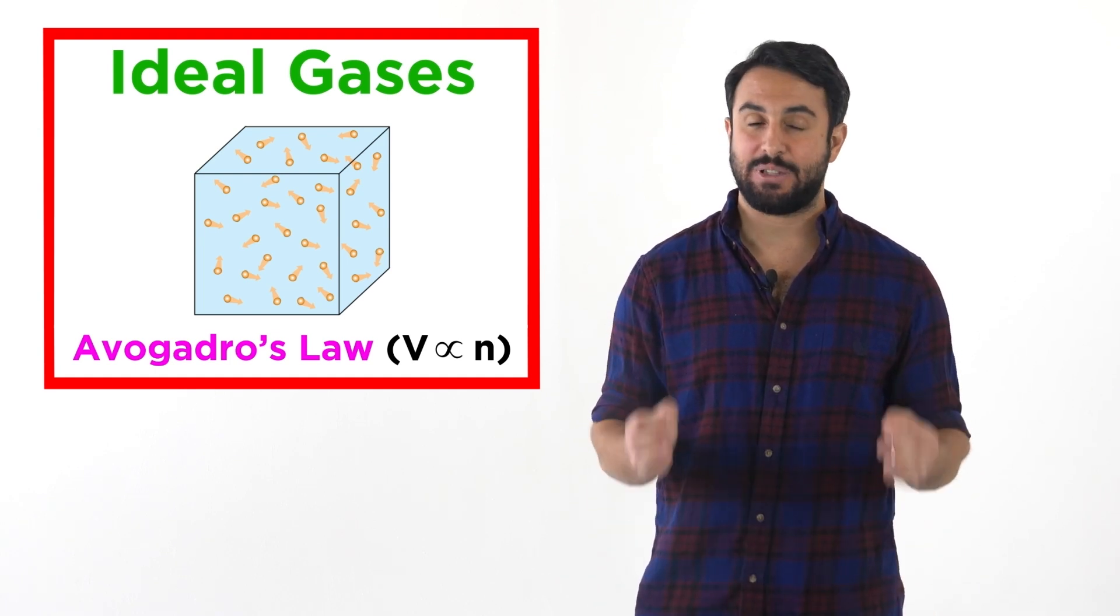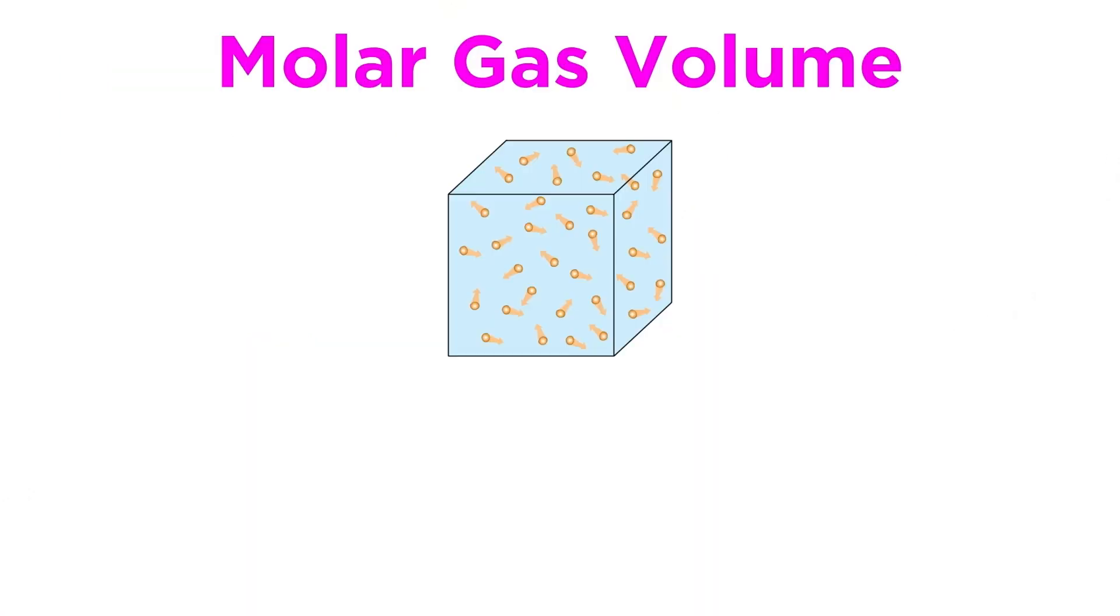Let's look at an interesting application of this law. Since we make the assumption that all ideal gases will behave the same way, regardless of the identity of the gas, we can also say something about the volume occupied by one mole of any ideal gas at standard temperature and pressure.